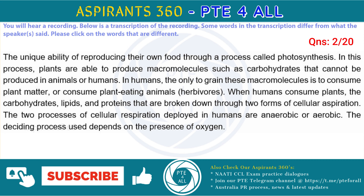When humans consume plants, the carbohydrates, lipids, and proteins are broken down through two forms of cellular respiration. The two processes of cellular respiration displayed in humans are anaerobic or aerobic. The deciding factor depends on the presence of oxygen.